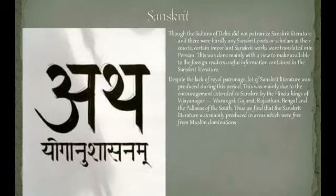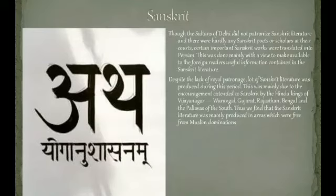Tulsidas was the greatest Hindu poet of medieval times who wrote Ram Charitmanas in Avadhi. Surdas was the greatest poet who wrote thousands of lively lyrics on different stages of Lord Krishna's life in Braj Bhasha, which is a dialect of Hindi. Mirabai's compositions were originally written in Marwadi. Even Kabir's writings were in a mixed language including Braj.